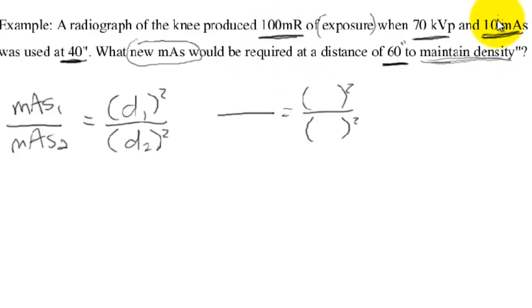Let's find our mAs1, which is 10. mAs2 is what it's asking for, so we don't know, it's going to be x. And then we just need our distances. So we don't really need milliröntgen, we don't need kVp. I'll just cross out the exposure because we don't really care. And let's circle our 60 inches as well.